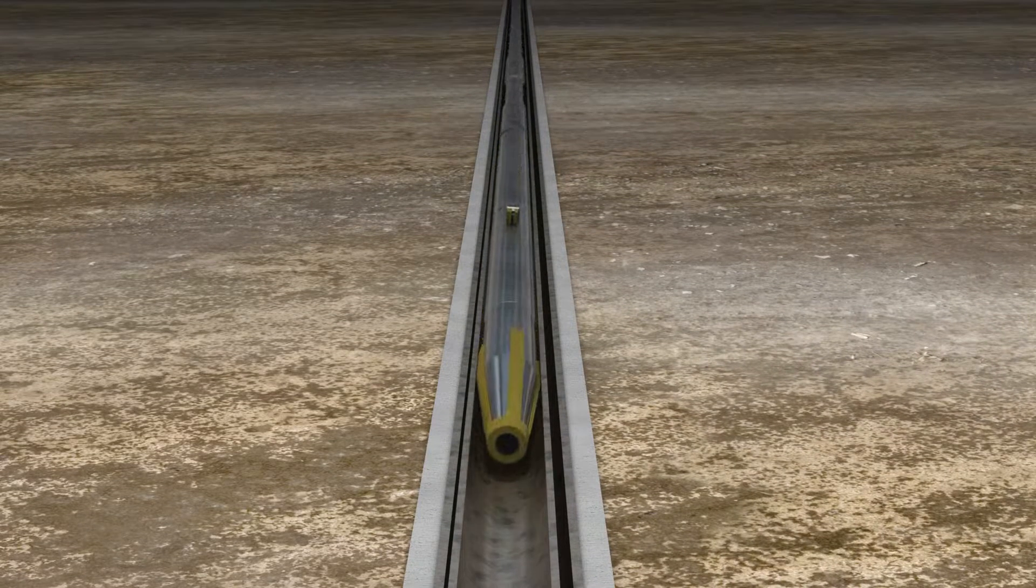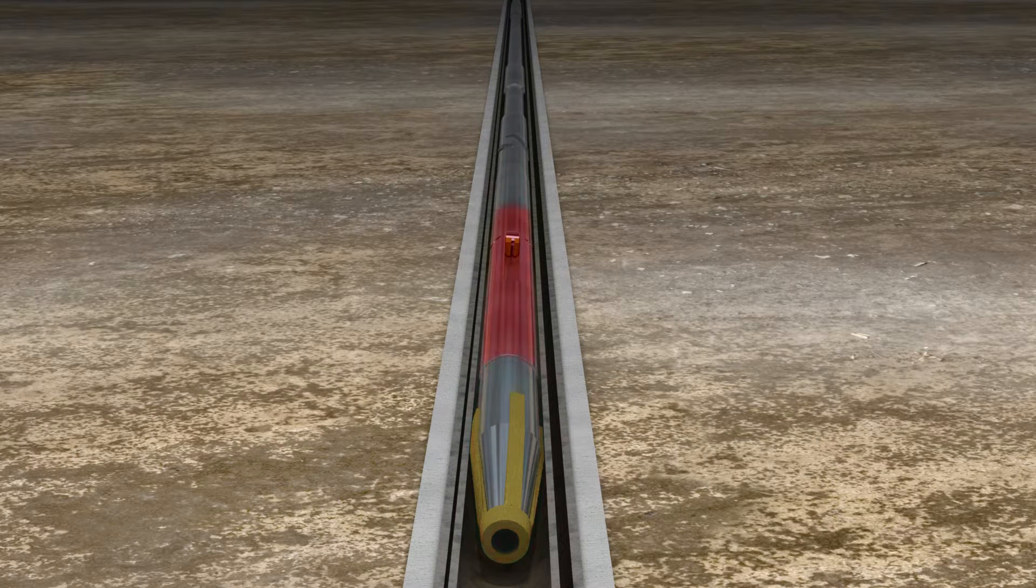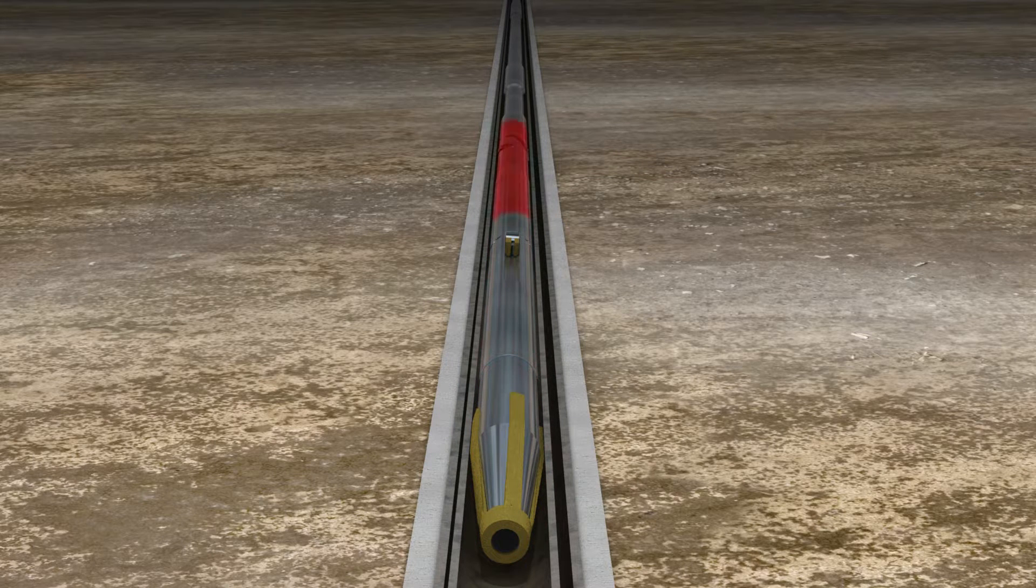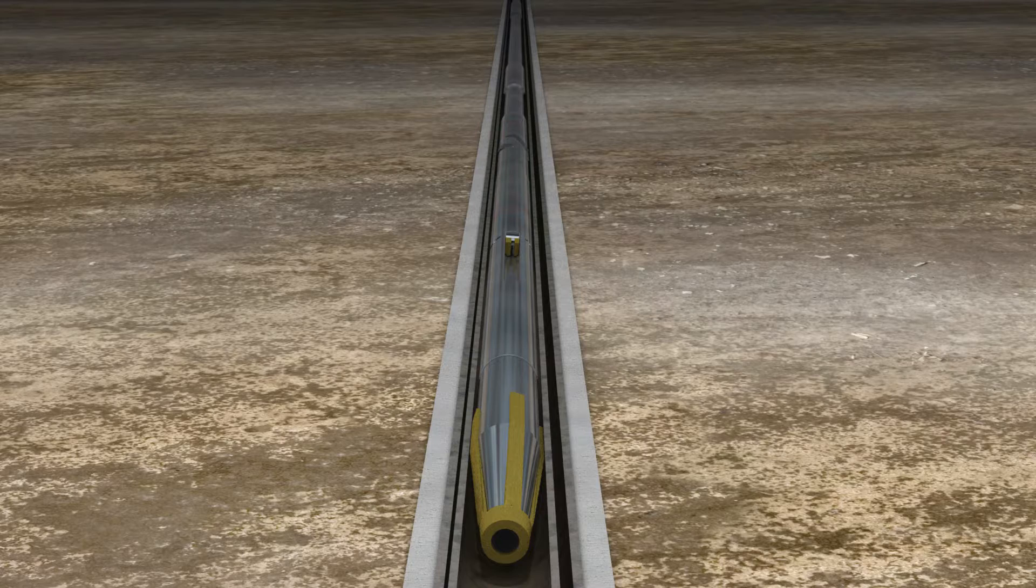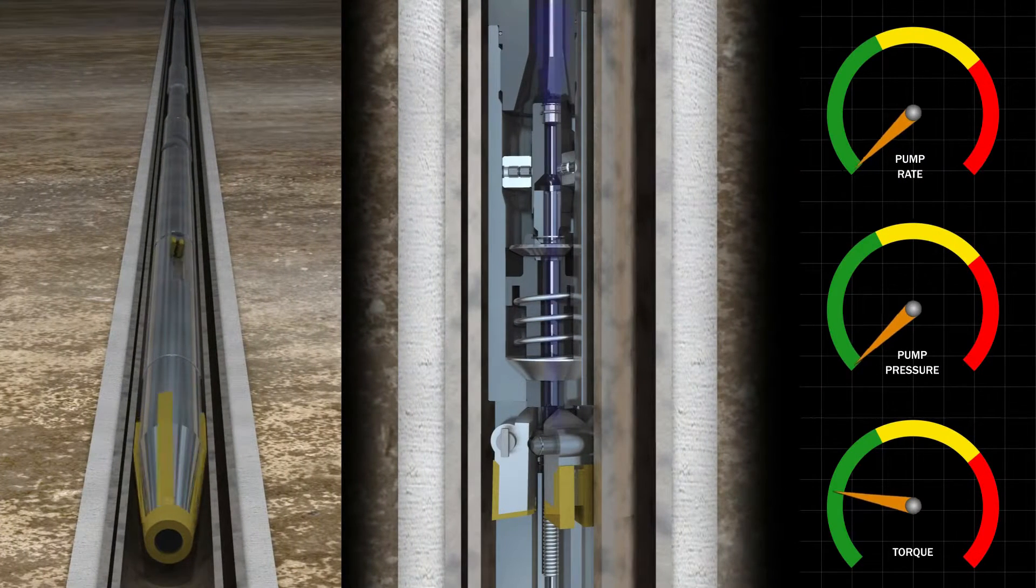A typical cutting assembly consists of a mill, the Wellbore Cutter, and a centralizer. Once in position, the string is rotated to the cutting RPM.